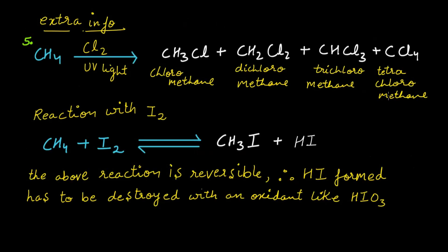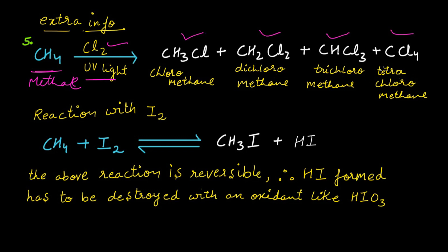The fifth method is extra information. If methane is treated with chlorine in the presence of UV light, you are supposed to get four different products: chloromethane, dichloromethane, trichloromethane, and tetrachloromethane. If you take ethane (CH₃CH₃) instead of methane, the number of possible products moves from four to six because there are six hydrogens. Whenever you treat any alkane with chlorine or bromine in the presence of UV light, the number of products increases according to the number of hydrogens.